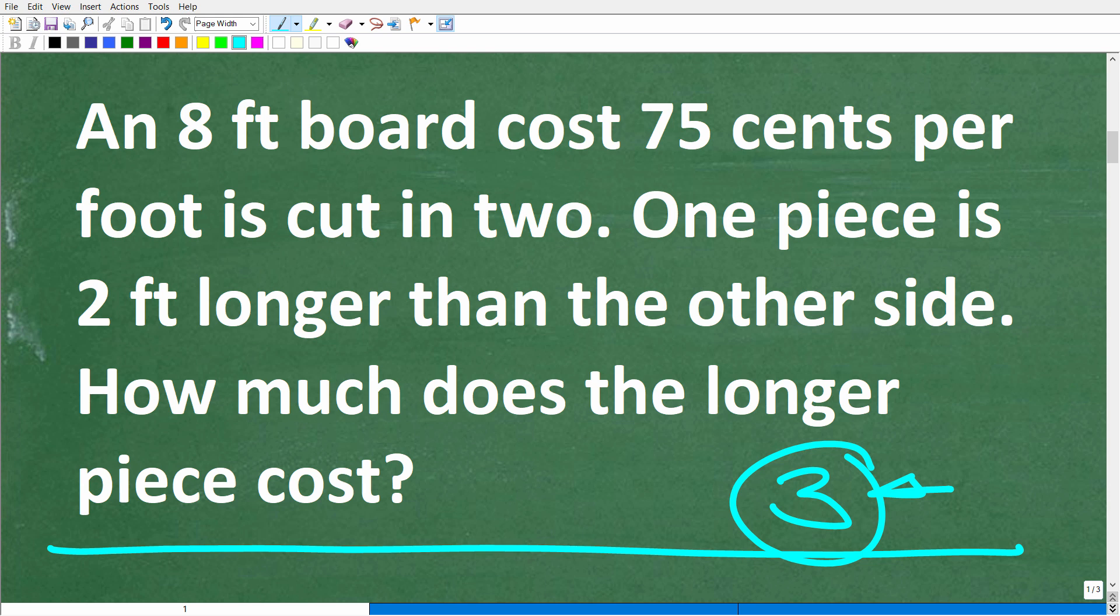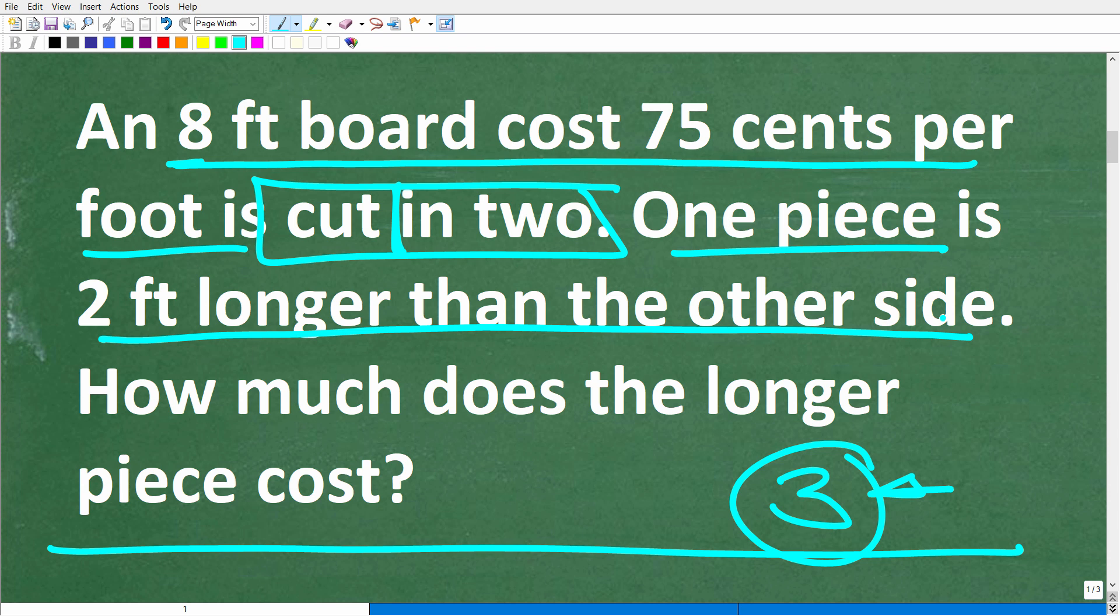Okay, so here we have this 8-foot board. It costs $0.75 per foot, and we're going to cut it into two pieces. So I'm thinking about a board that I cut into two pieces. Now we're going to have a short side and a long side because one piece is two feet longer than the other side. So the question here is, how much does the longer piece cost?